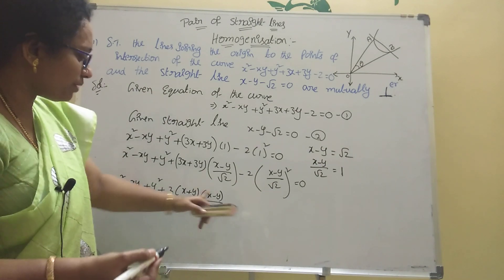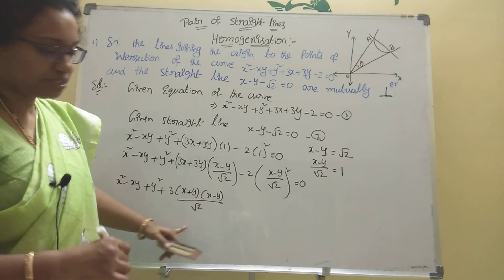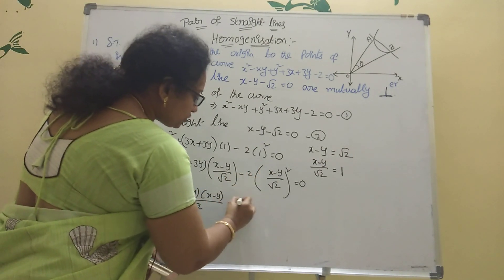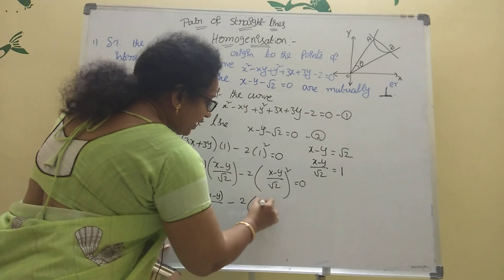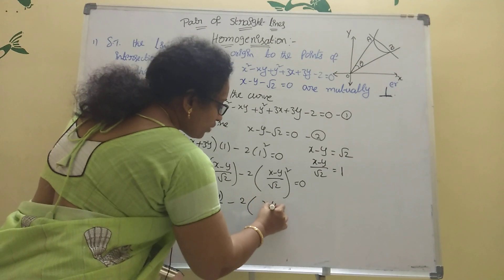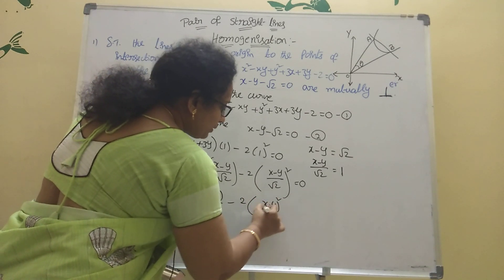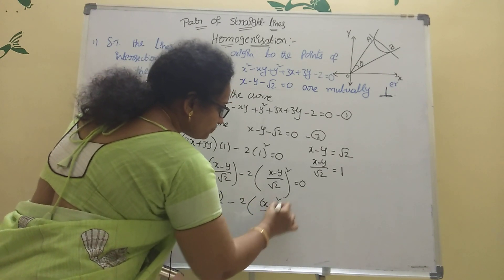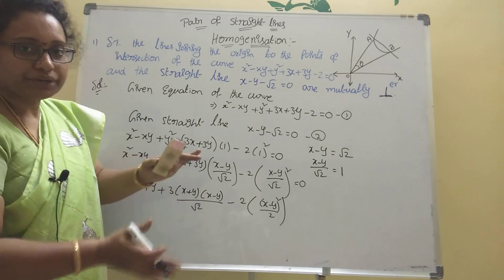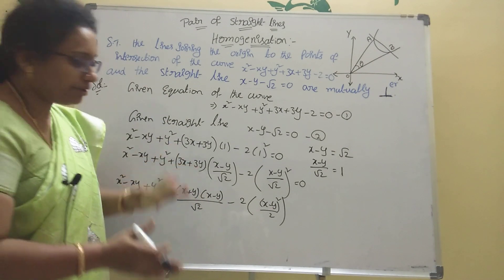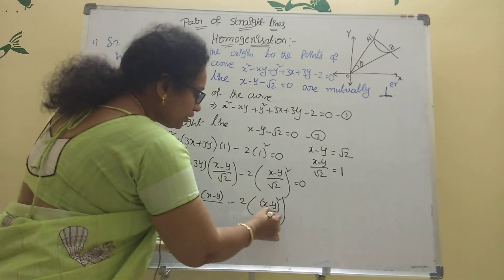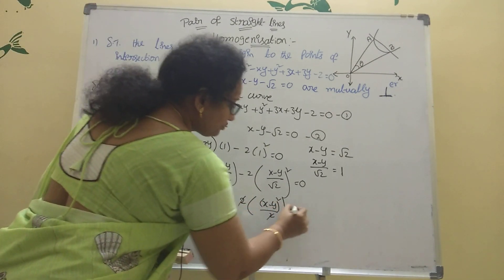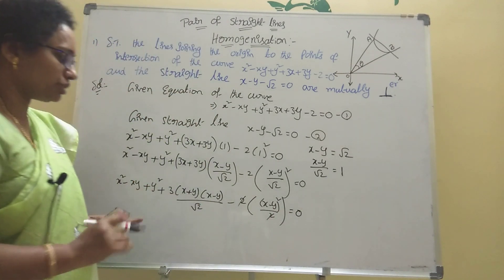The formula a plus b into a minus b equals a squared minus b squared. So the simplification becomes easy. Then we write x minus y whole squared by 2, and split the numerator and denominator. Then the 2 cancels out.